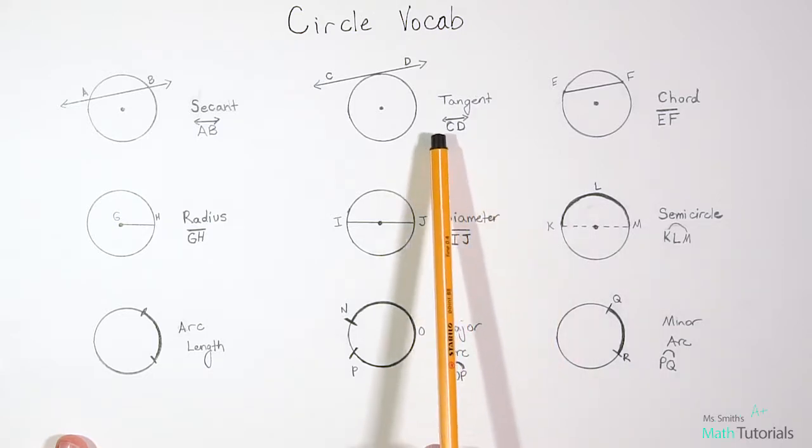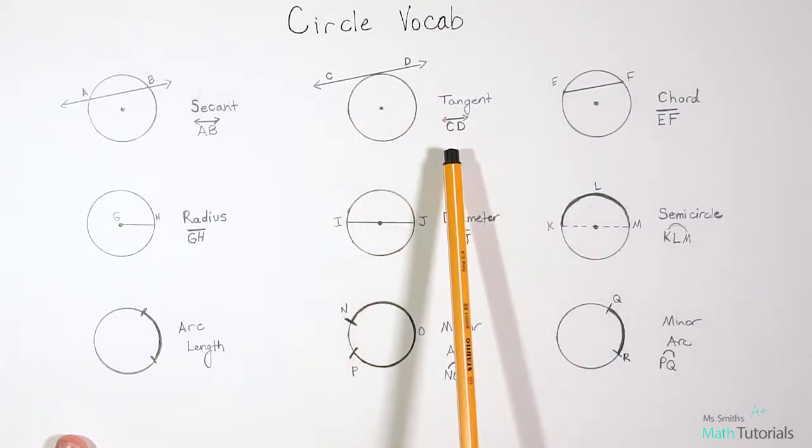And when we write that, we would write it as, in this case, CD. We'd write it as tangent. And then above CD, you'd want a little line with arrows because it is a line that continues.